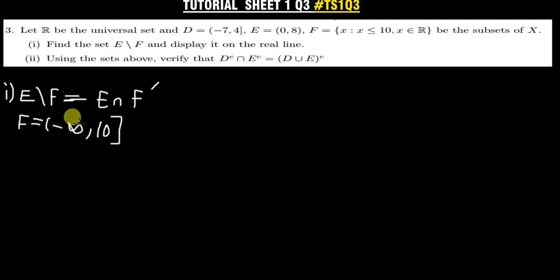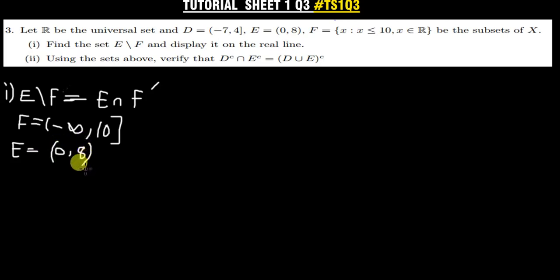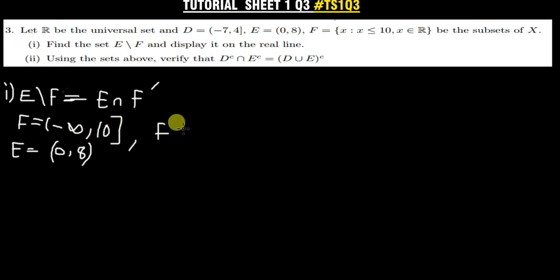E is equal to [0, 8]. Now we find F complement. If F is from negative infinity up to 10, then F complement starts from 10. Since 10 is part of F it will not be part of F complement, so F complement is (10, +∞).